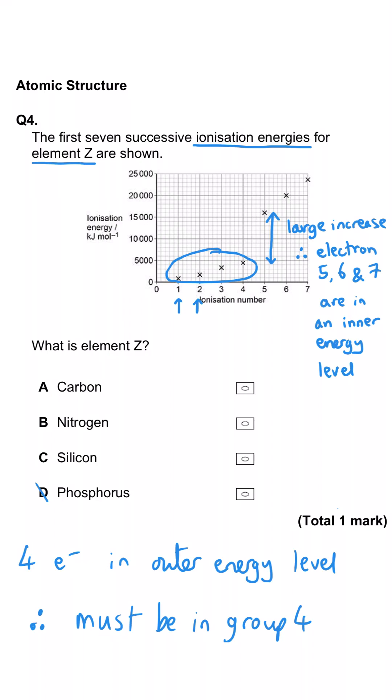This means that we can rule out phosphorus and nitrogen, which are both in group five. And now we have to differentiate between carbon and silicon. Well carbon has an atomic number of six, which means it only has six electrons and so can't have seven ionization energies and so it is wrong and silicon is the correct answer.